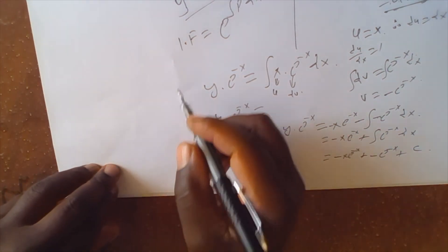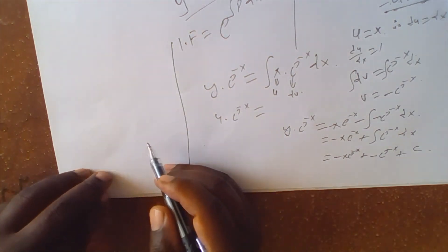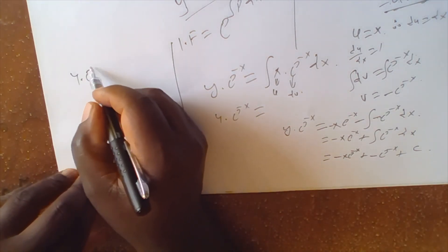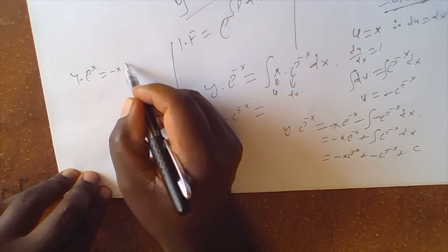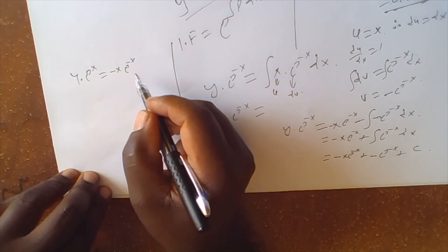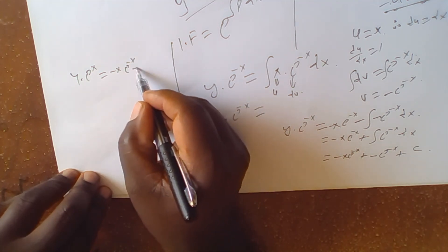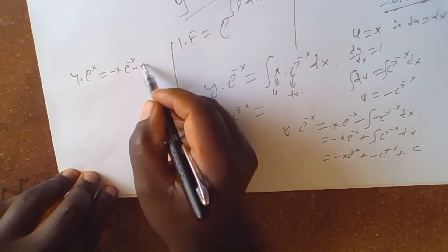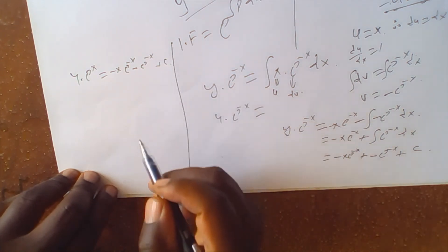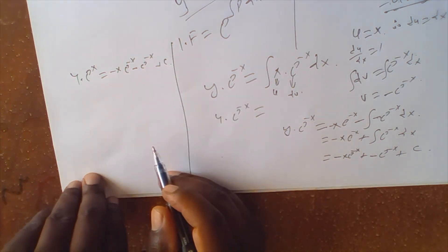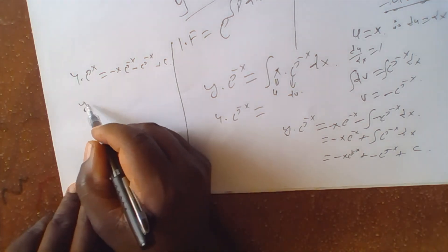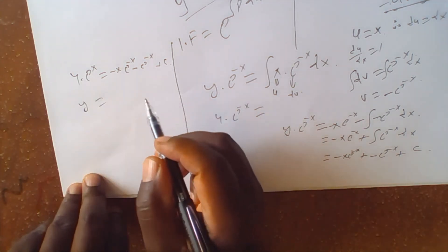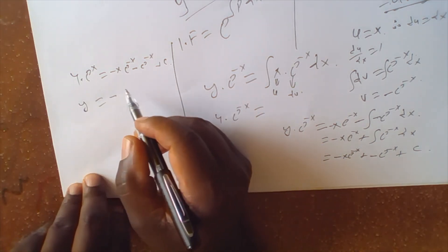Therefore we are saying that y times e to the negative x equals negative 2x e to the negative x minus e to the negative x plus a constant of integration. Solving for y alone, we divide through by e to the negative x.